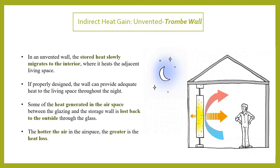Some of the heat generated in the air space between the glazing and the storage wall is lost back to the outside through the glass. During night, this hot air easily loses its heat through the glass wall — the hotter the air in the air space, the greater the heat loss. This is the major disadvantage of the unvented Trombe wall: by night it easily gives out its warmth.